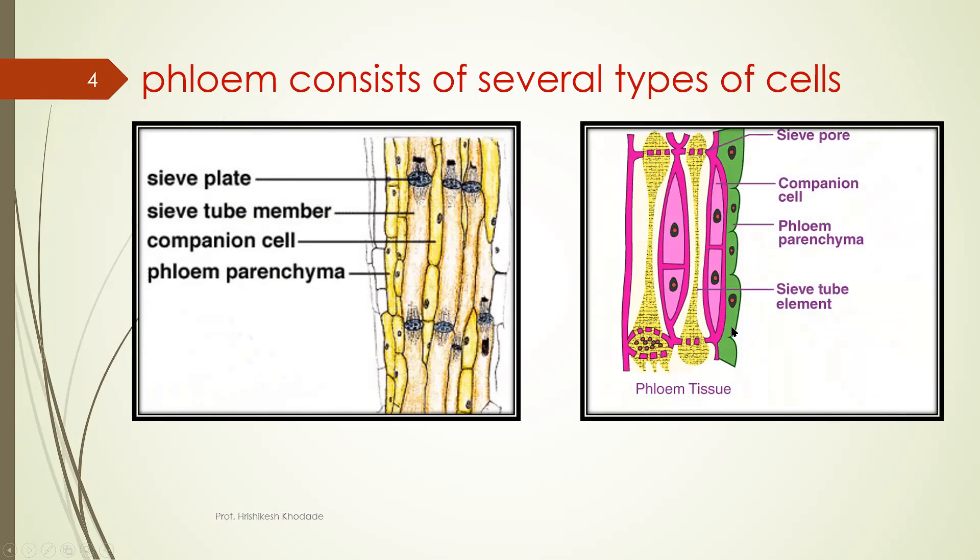The outer side you have phloem parenchyma. So these reddish color cells are companion cells. So in between the companion cell, you have sieve cell elements and which are guarded by these pores.